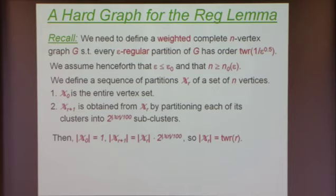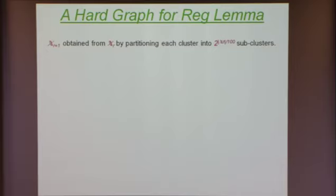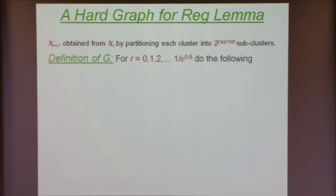This is just the partition structure — I haven't said anything about the edges of this graph or the weights on the edges. Now I'm going to define what the graph is. I'm defining a weighted complete graph, not a usual graph where I have either an edge or a non-edge. I'm going to define this graph using an iterative process.